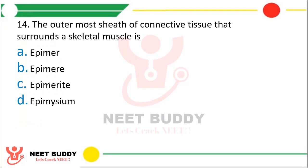Question: The outermost sheath of the connective tissue that surrounds a skeletal muscle is — option A, epimer; option B, epimer; option C, epimerite; option D, epimysium. The correct answer is option D, that is epimysium.